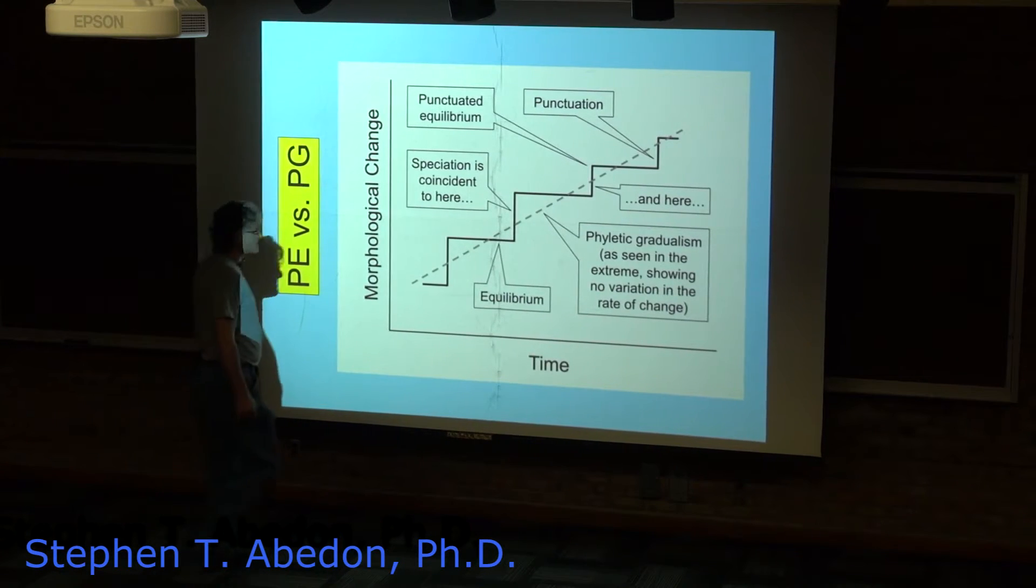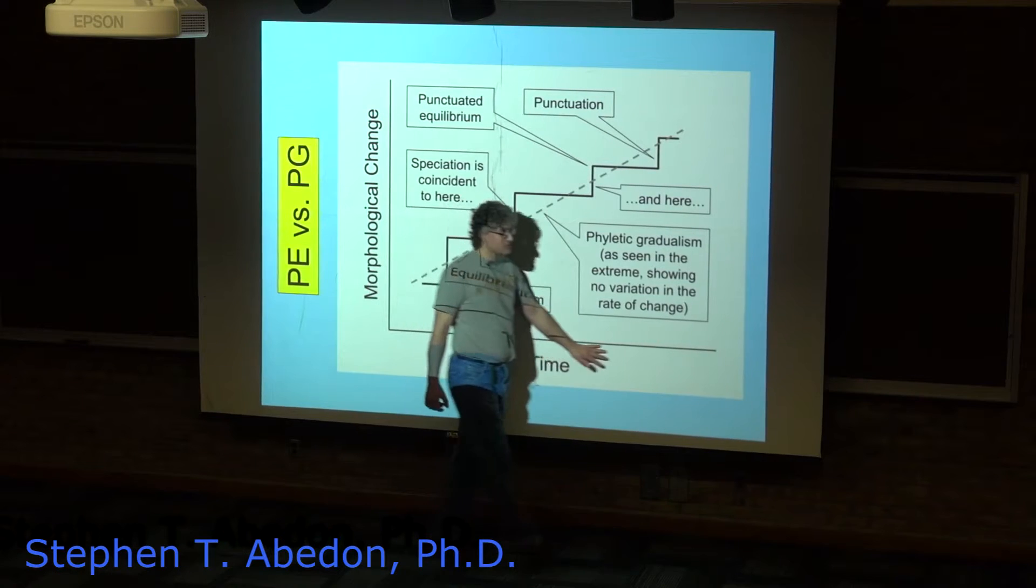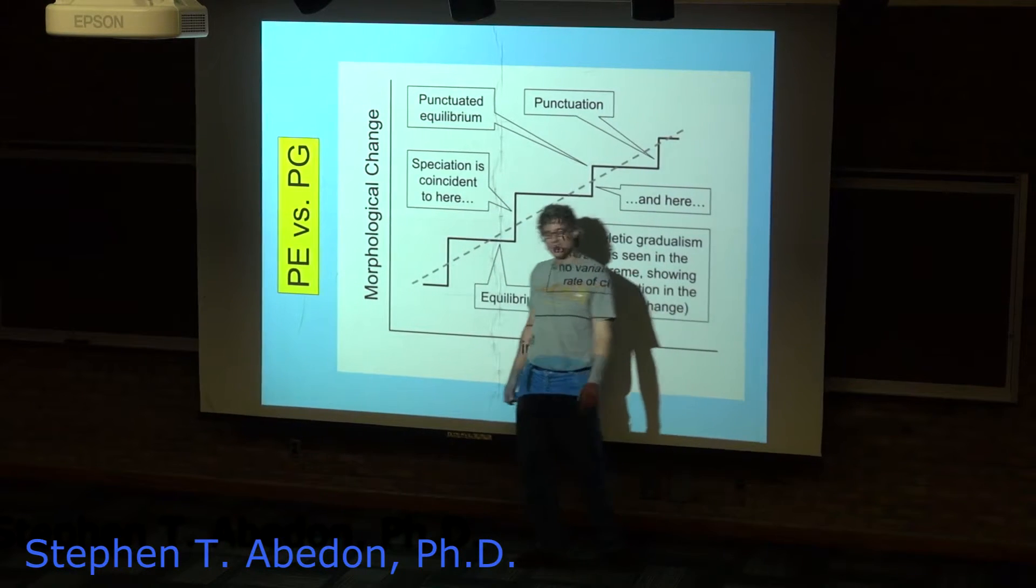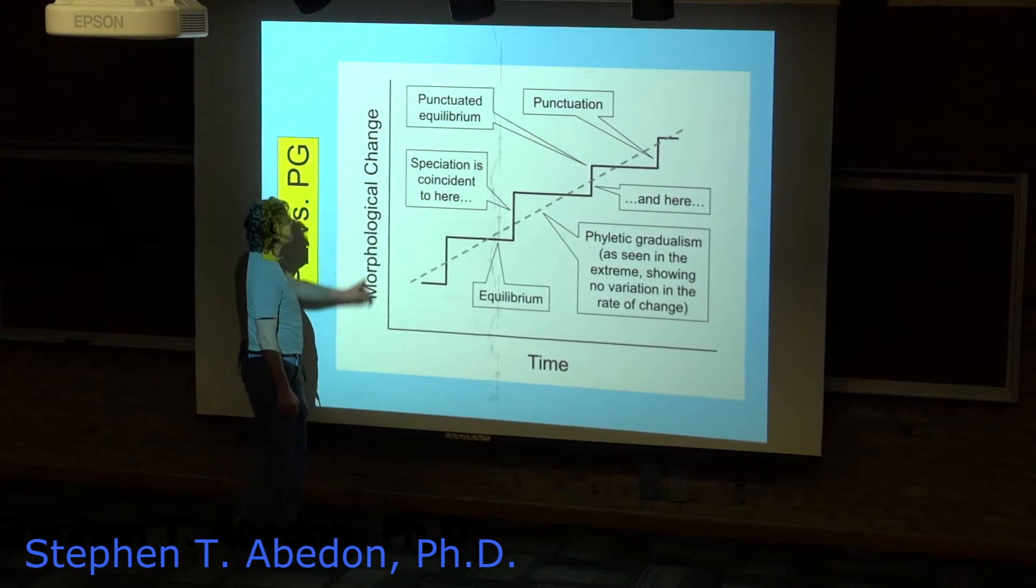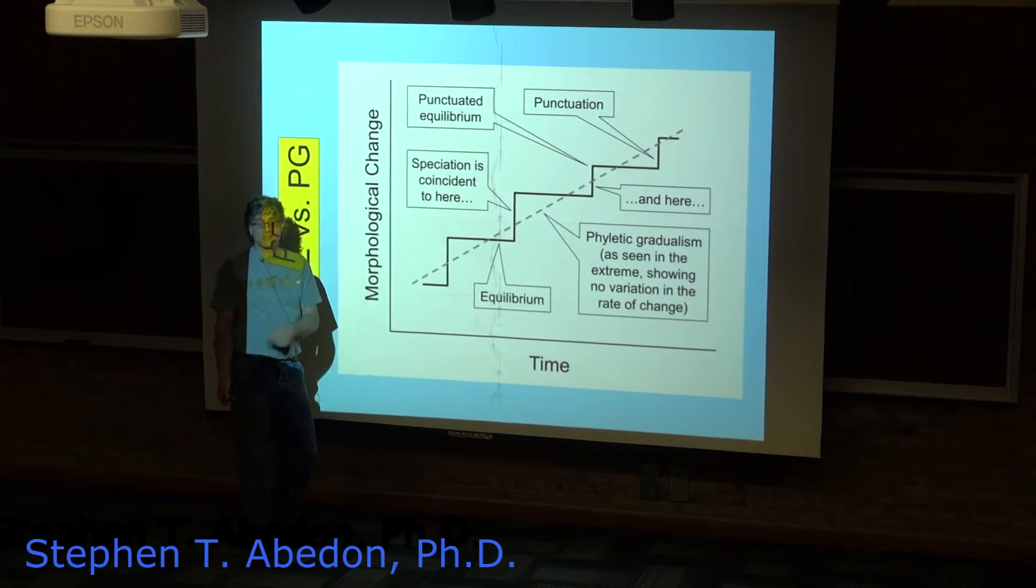Another way we can present this is with time on the horizontal axis as the independent variable and some measure of morphological change on the vertical axis.